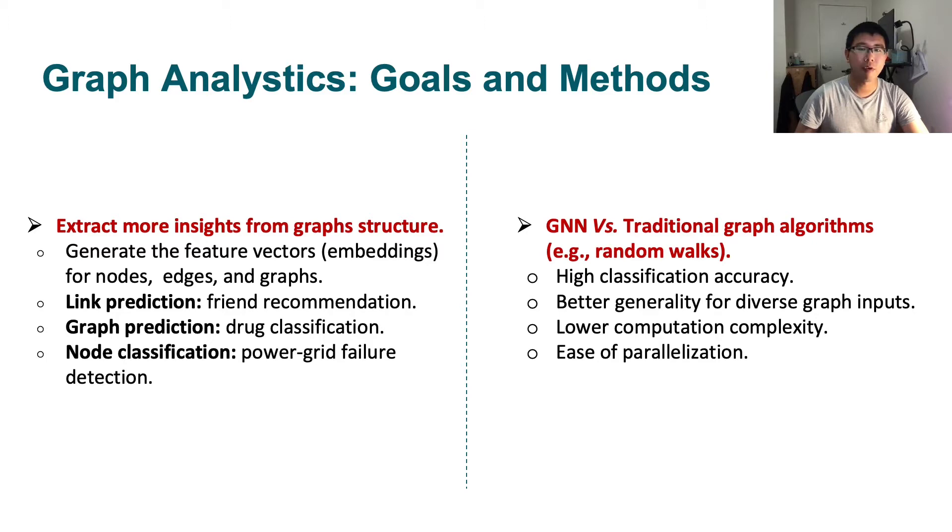There are two major types of methods: graph neural networks and traditional graph algorithms such as random walks. For graph neural networks, they generally achieve high classification accuracy, better generality for diverse graph inputs, lower computation capacity, and are easier for parallelization.